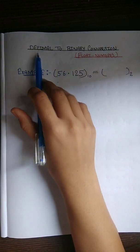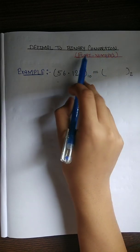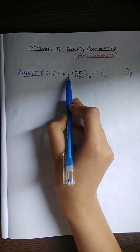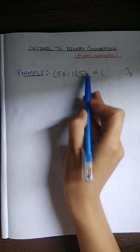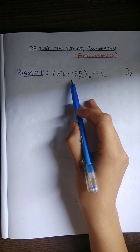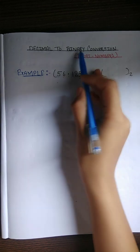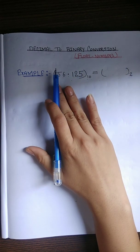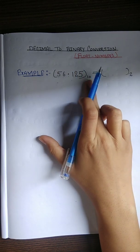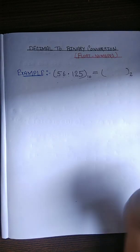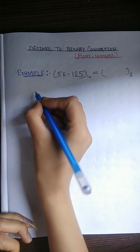Hello everyone, today we are going to see decimal to binary conversion of a floating number. We are taking the example 56.125, which is in decimal form — its base is 10 — and we have to convert it into binary form, where the base is 2.